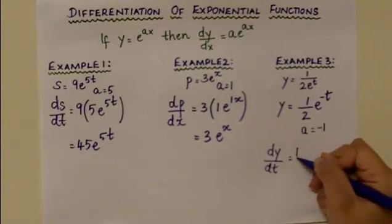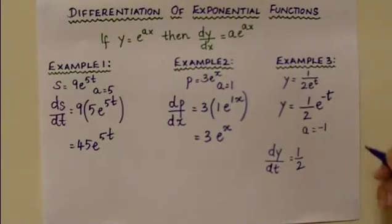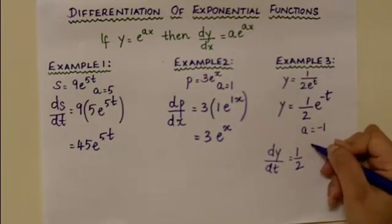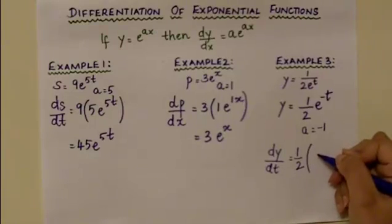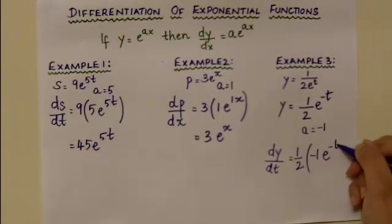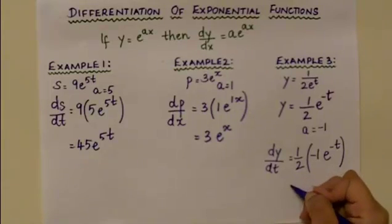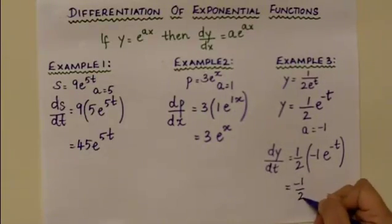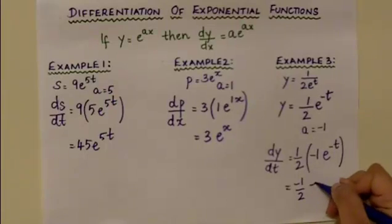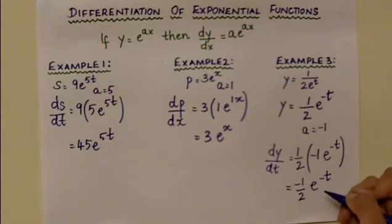One half is the coefficient of the whole function, so it remains as one half. A is minus 1, giving e to the power of minus t. Therefore, one half times minus 1 is minus one half, and the final answer is minus one half e to the power of minus t.